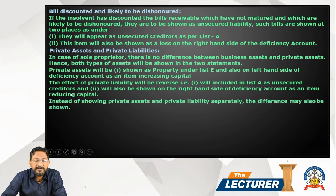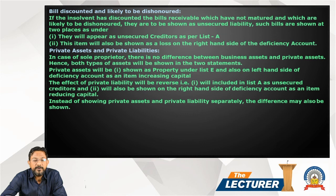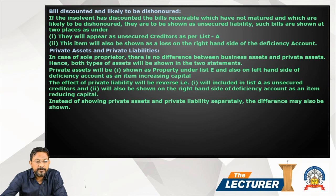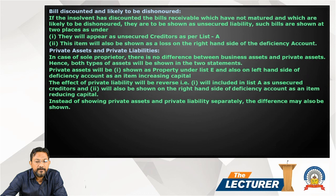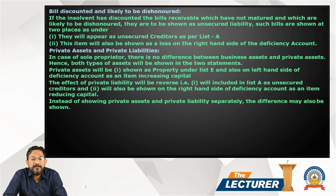Alternatively, instead of showing private assets and private liabilities separately, only the net difference may be shown. So if there is excess of private assets over private liabilities, it is shown on the left-hand side of the deficiency account. With this, all the theoretical points are complete. The next lecture will cover practical questions. Thank you.